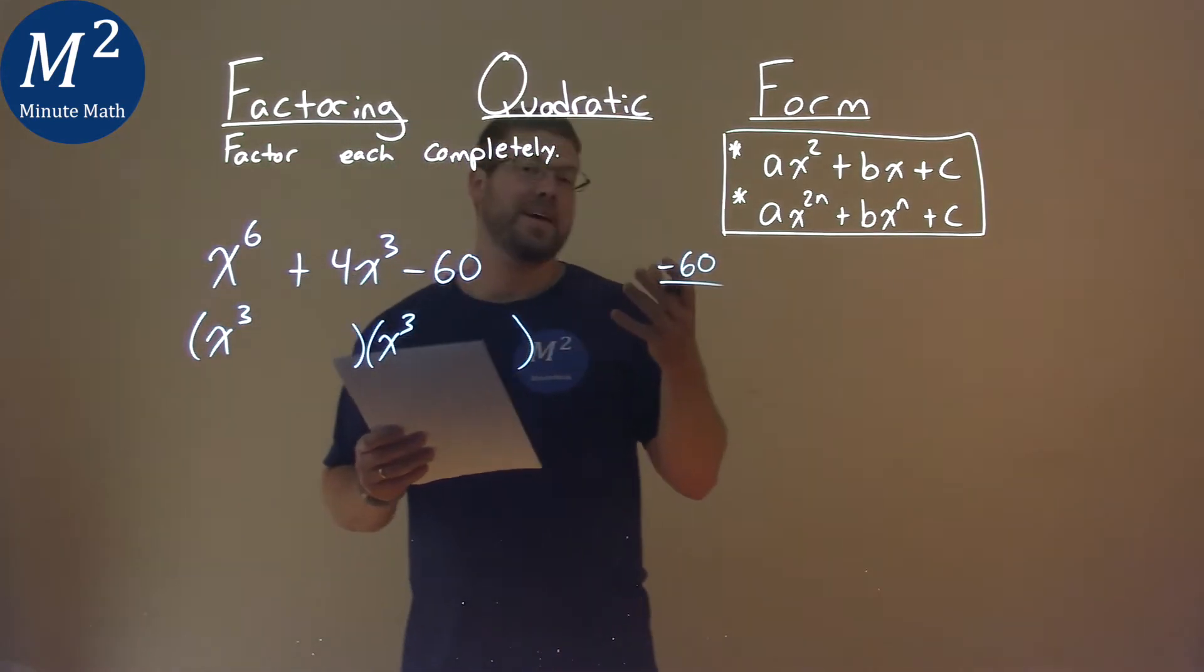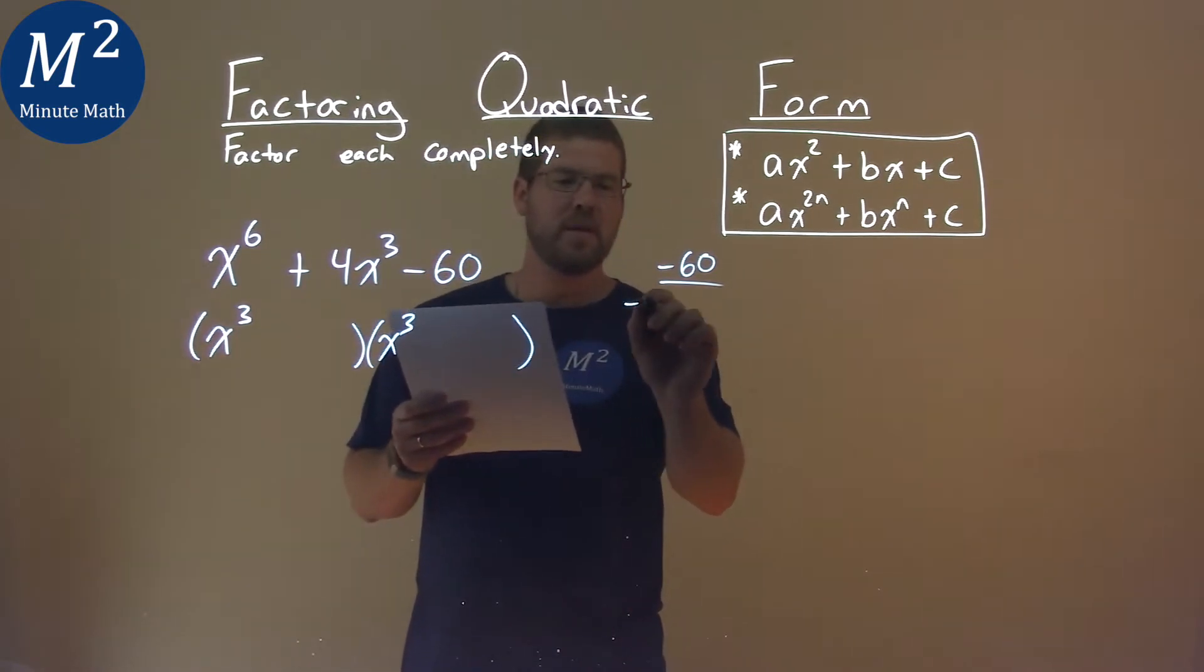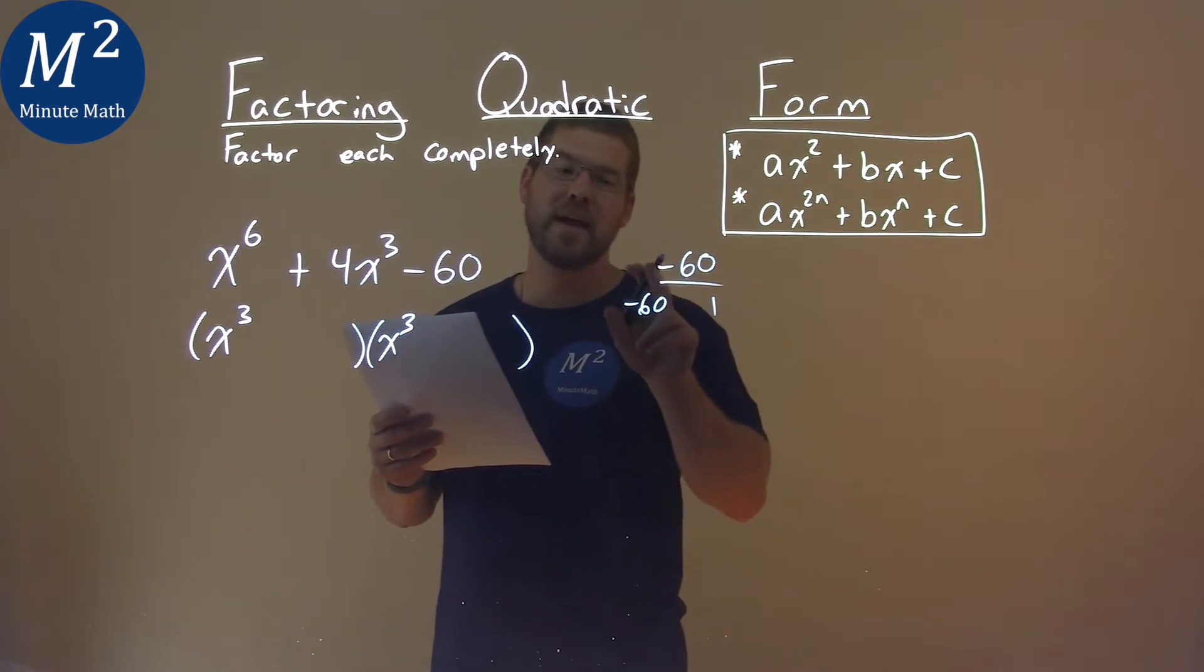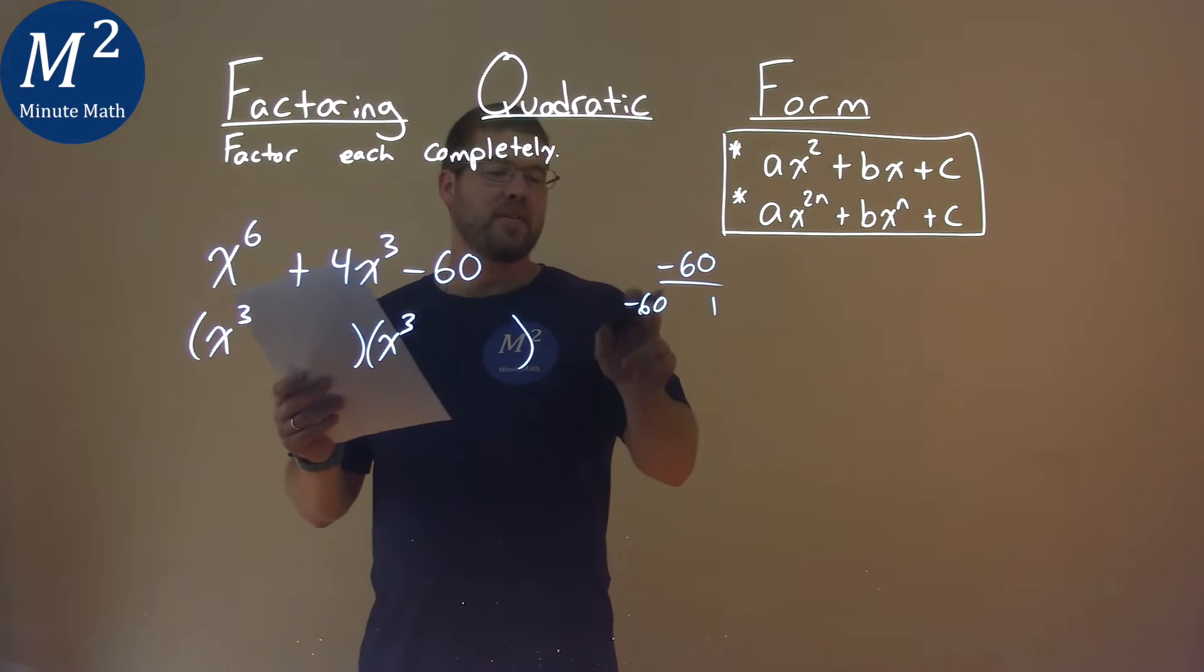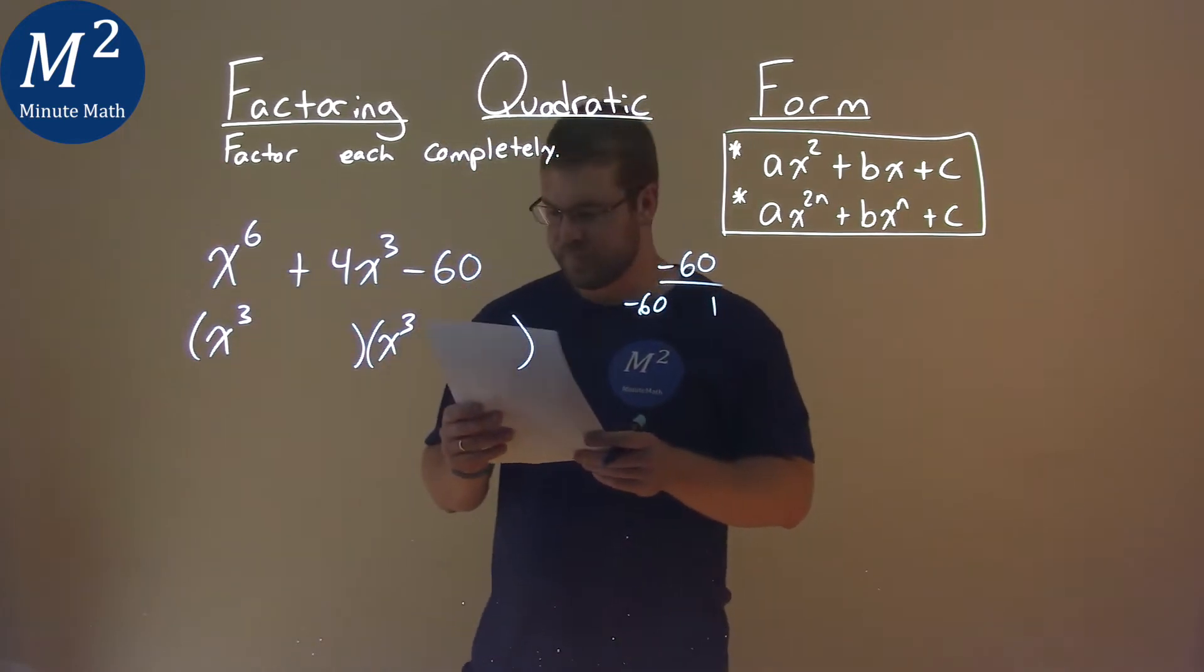We have to find two numbers that multiply to be negative 60, so let's list them all. There's quite a few. Negative 60 times 1, and one of them will have to be negative because our b value is positive and our c value is negative.